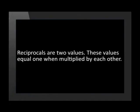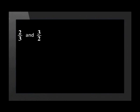Let's start by revising what we already know about reciprocals. Reciprocals are two values that equal one when they are multiplied by each other. Two over three and three over two are reciprocals of each other. When we multiply these two values, we get an answer of six over six, which can be simplified to one.